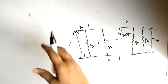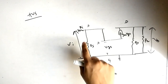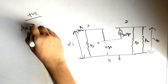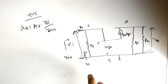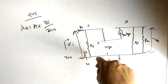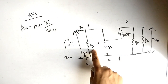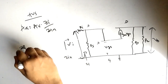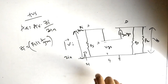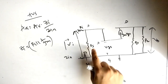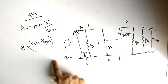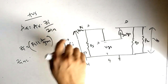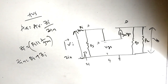For Avs (when Ri is present): Avs = Av × (Zi / Zin). Here Zi is the input resistance looking into the source terminal, and Zin = Ri + Zi. The important point is that Zi is not simply Rs — there is a hidden resistance. So Zi = Rs ∥ (1/gm). Therefore Zin = Ri + Zi = Ri + (Rs ∥ 1/gm), and Avs = Av × (Zi / Zin).